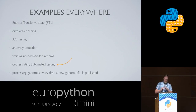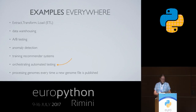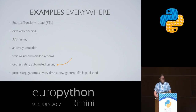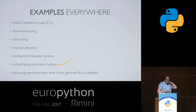This workflow methodology is so generic that there are examples almost everywhere. Many types of ETL workflows could be defined. Data warehousing is also a place where you would use a workflow. You could use a workflow when you're doing A/B testing to handle some of the automatic steps. Anomaly detection is another area where workflows are used. Training recommender systems, like those just presented in the previous talk, are probably using some workflow system to get the job done. And orchestrating automated testing.